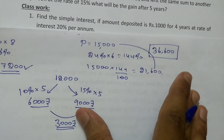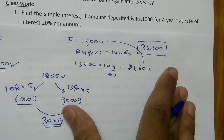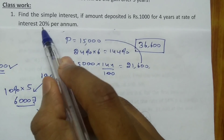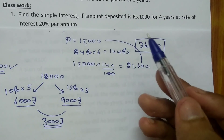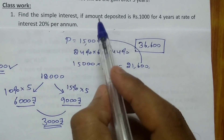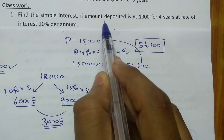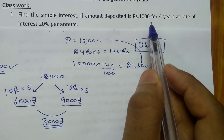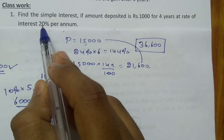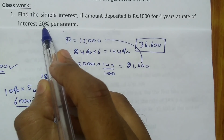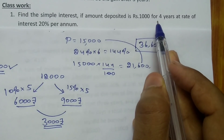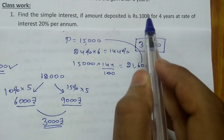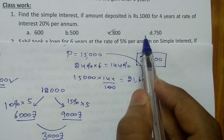Fourth question: find the simple interest if the amount deposited is Rs.1000 for 4 years at 20% per annum. For 1 year you get 20%, and for 4 years that is 20 into 4 = 80%. So 80% of Rs.1000 is Rs.800. Rs.800 is the total simple interest for this Rs.1000 deposit. So the answer is Rs.800.